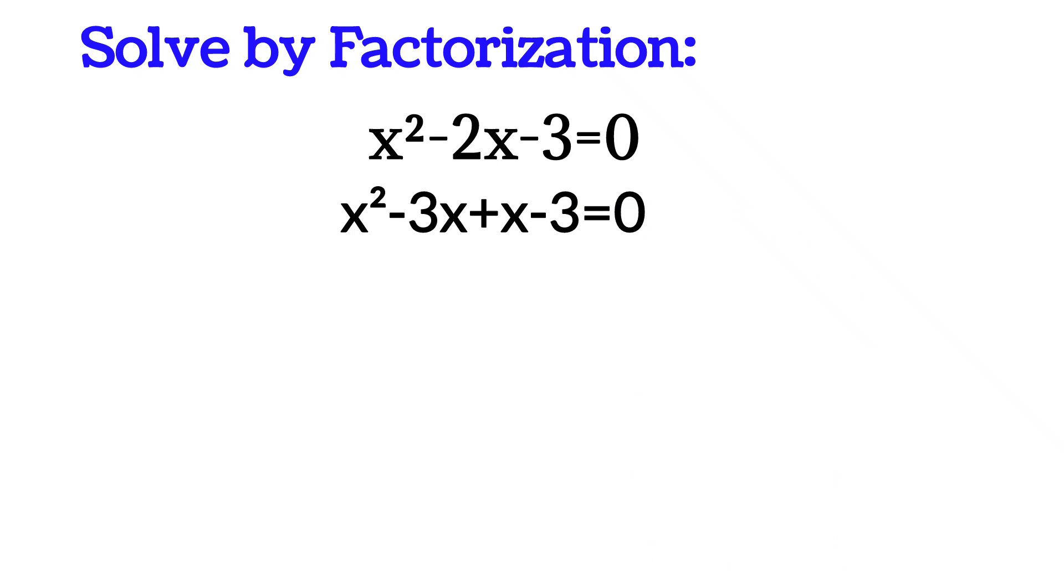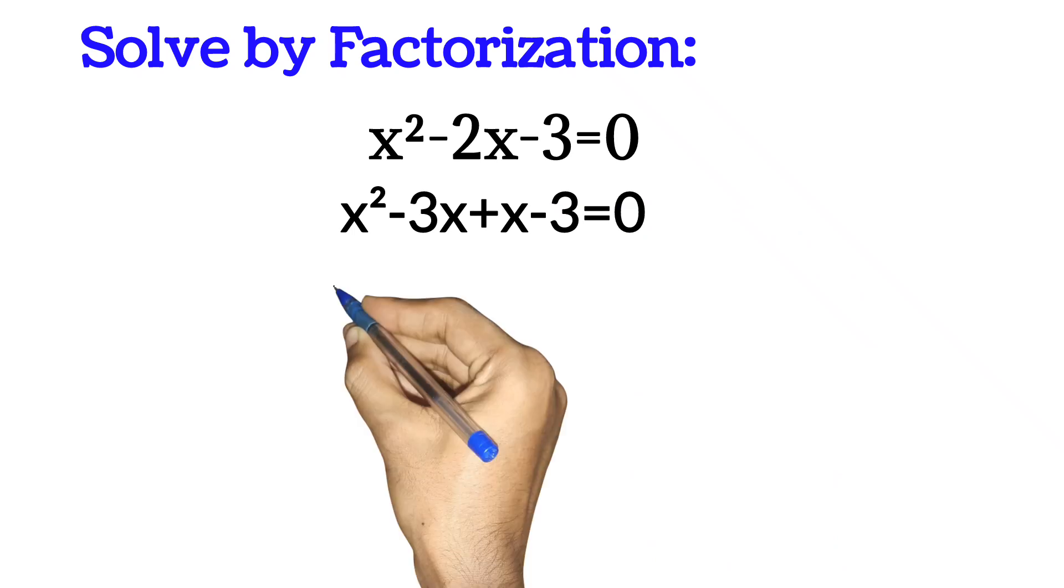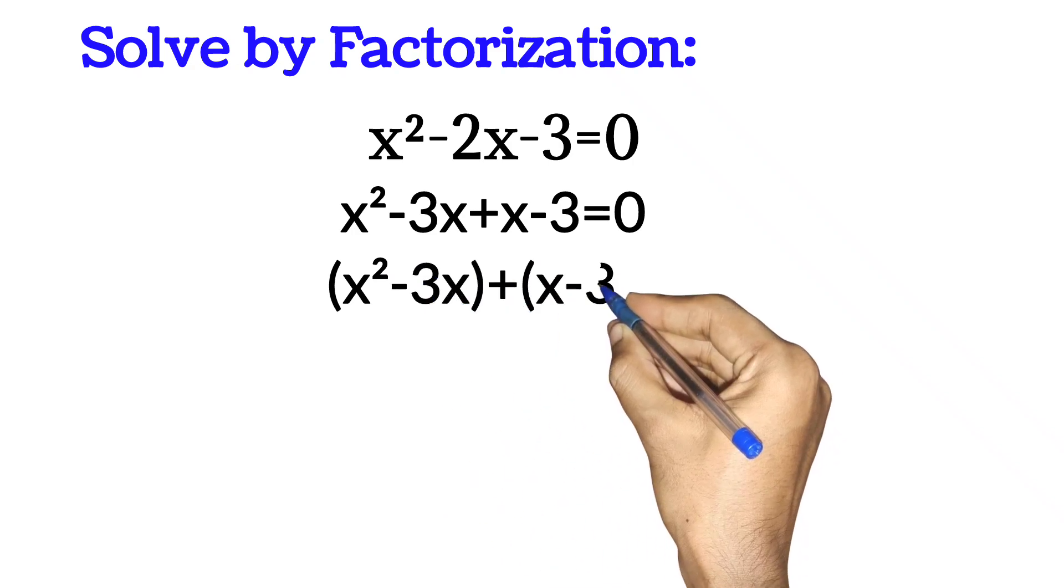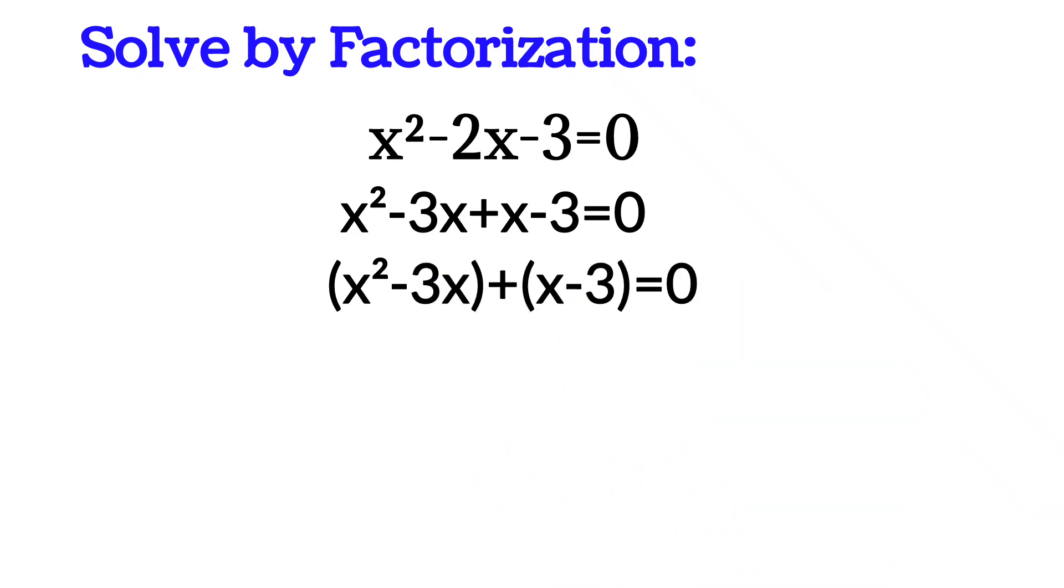From here, you group this equation into two: x² - 3x + x - 3 = 0. In this first bracket, x is common.